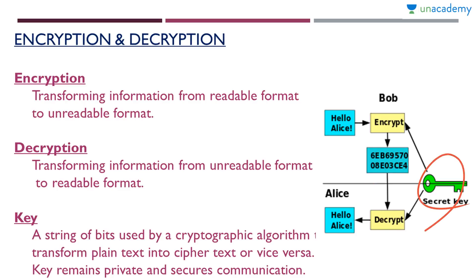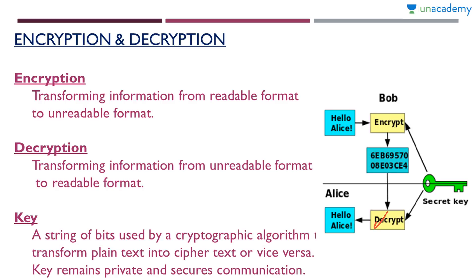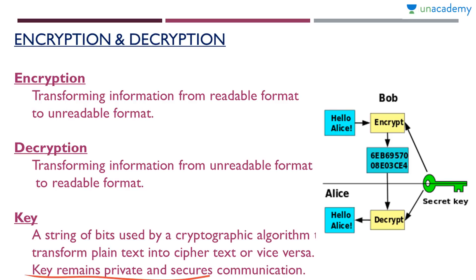For encryption and decryption we need a secret key, shared between the sender and receiver. A key is a string of bits used by a cryptographic algorithm. There will be encryption algorithms and decryption algorithms, and these algorithms make use of this secret key to transform plain text into ciphertext or vice versa. Ciphertext means the encrypted version and plain text means the original message. The key remains private and secures the communication — it is very confidential and must be protected from any unauthorized disclosure.